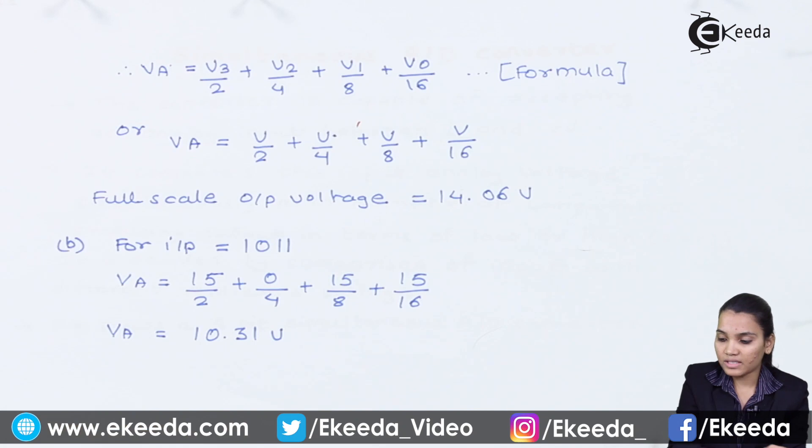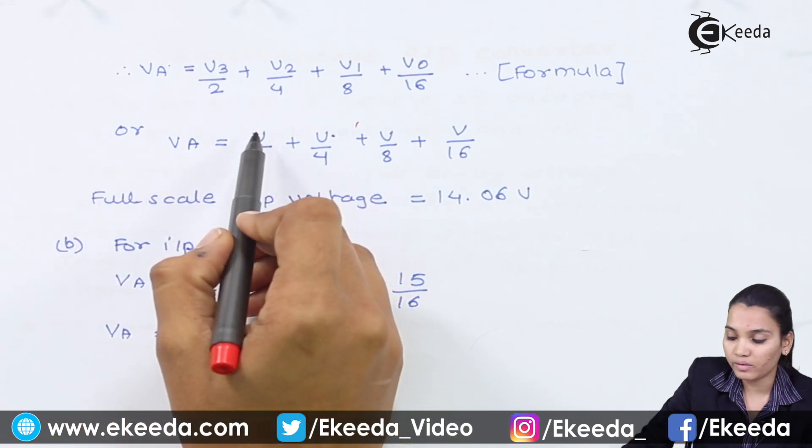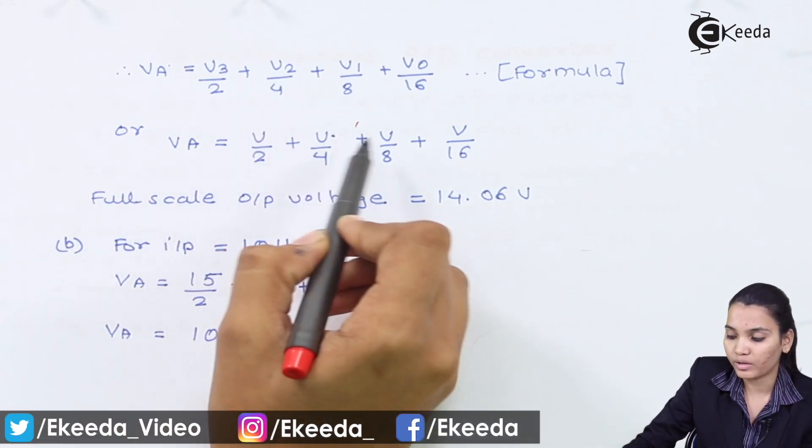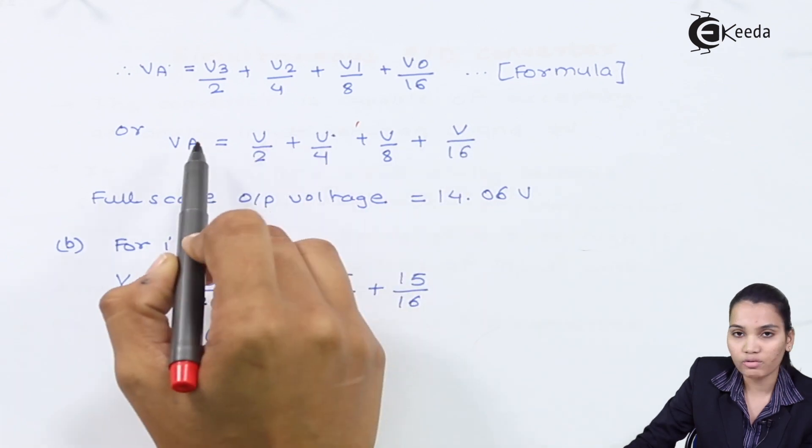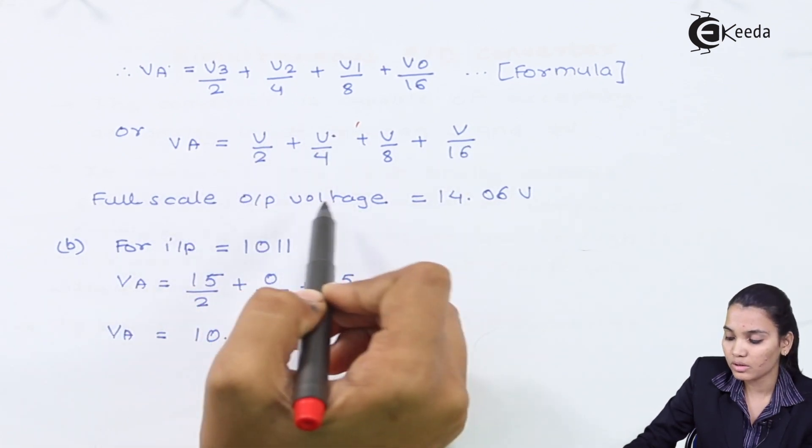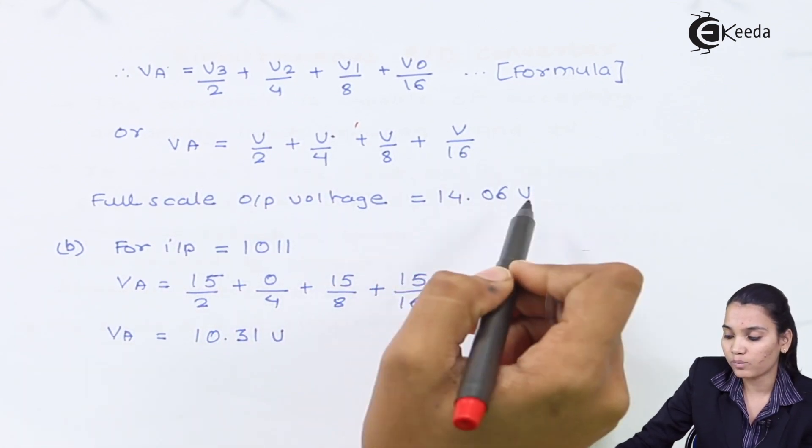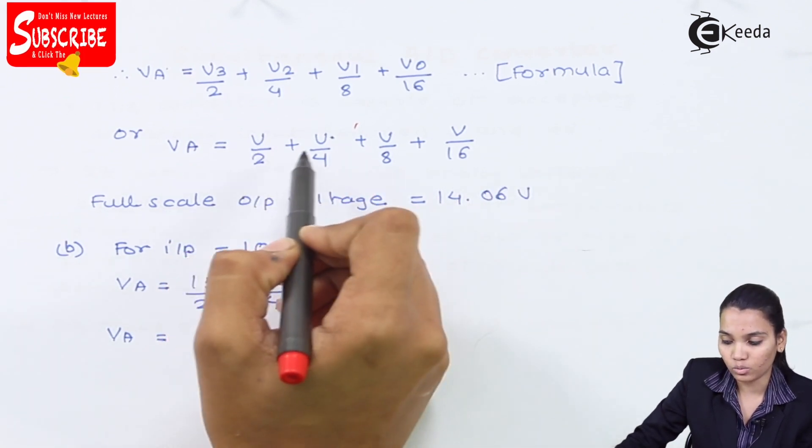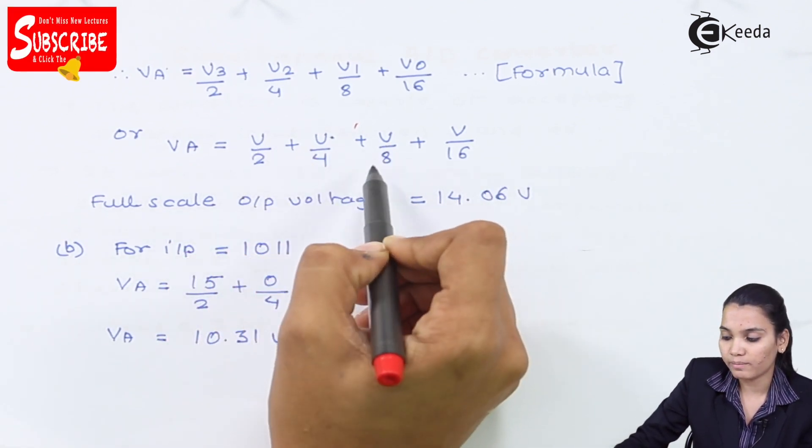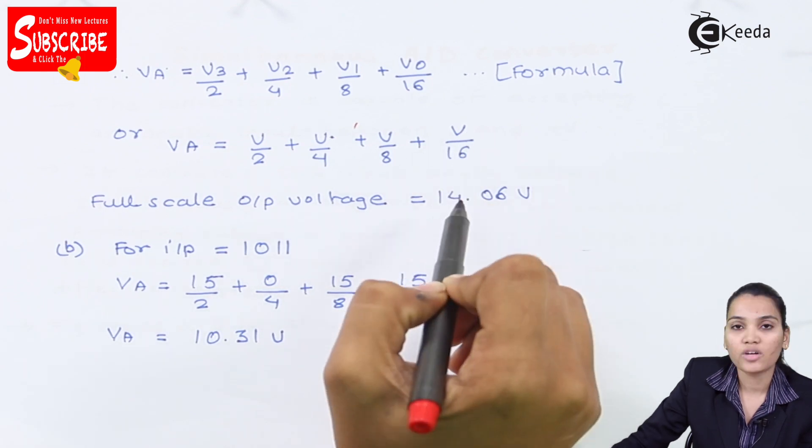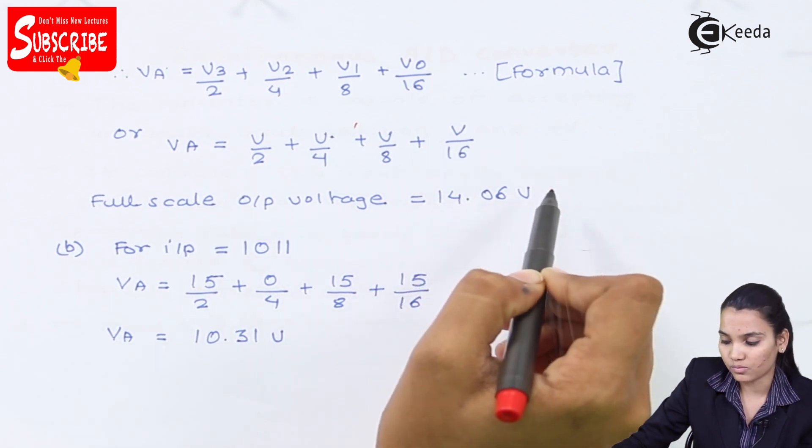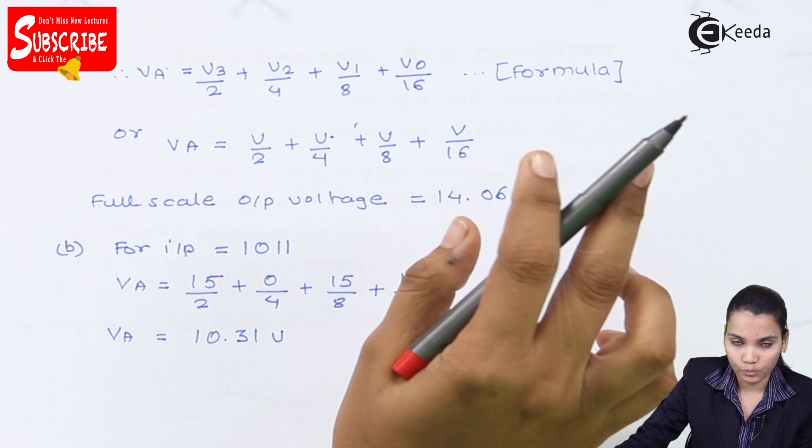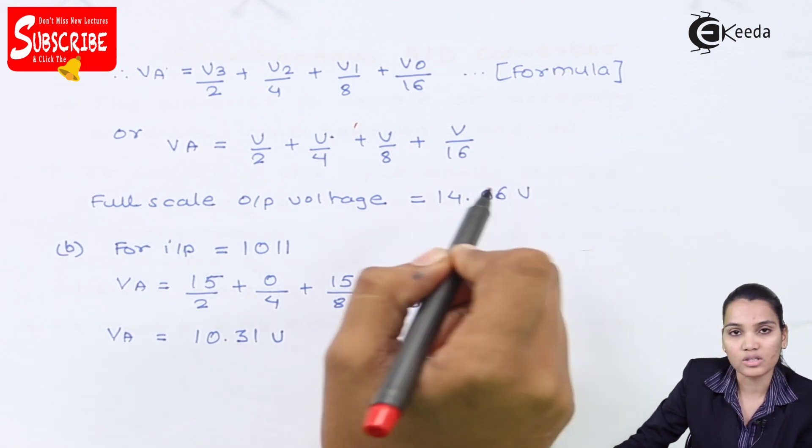So therefore, after substituting the value of V, we will substitute 15, 15, 15, and 15. So after calculating this, we will get the full scale output voltage as 14.06 volts. So 15/2 + 15/4 + 15/8 + 15/16 will give you 14.06 volts. So that means the full scale output voltage is 14.06 volts.